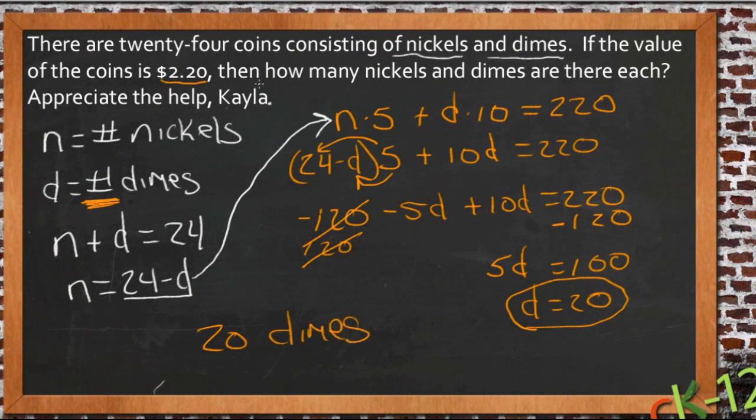Then if there are a total of 24 coins, there must be 4 nickels. And we can do that by substituting it if we want by taking the 20 dimes or the 20d and putting it in here, n plus 20 equals 24. Solve for n, we get n equals 4.